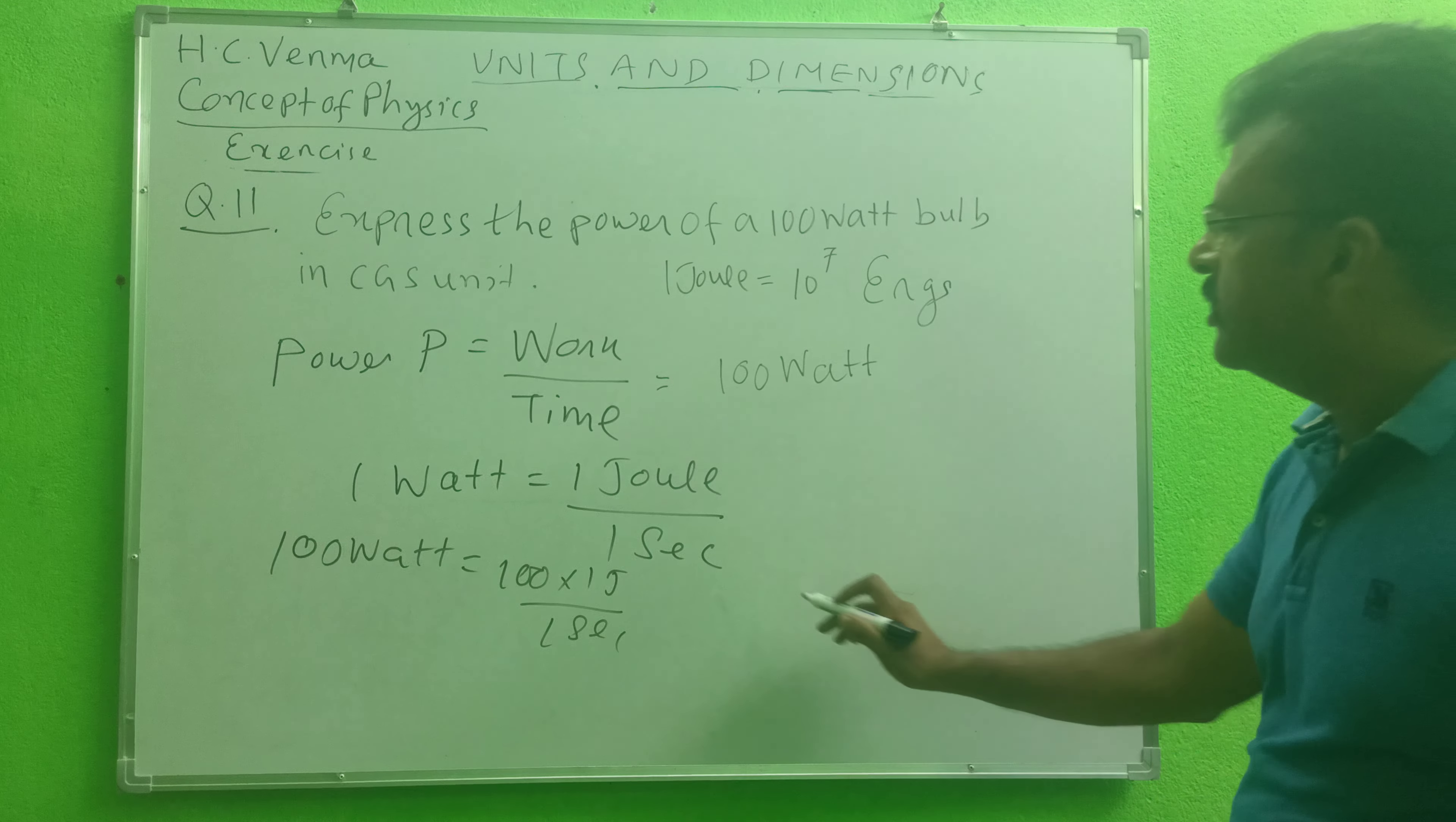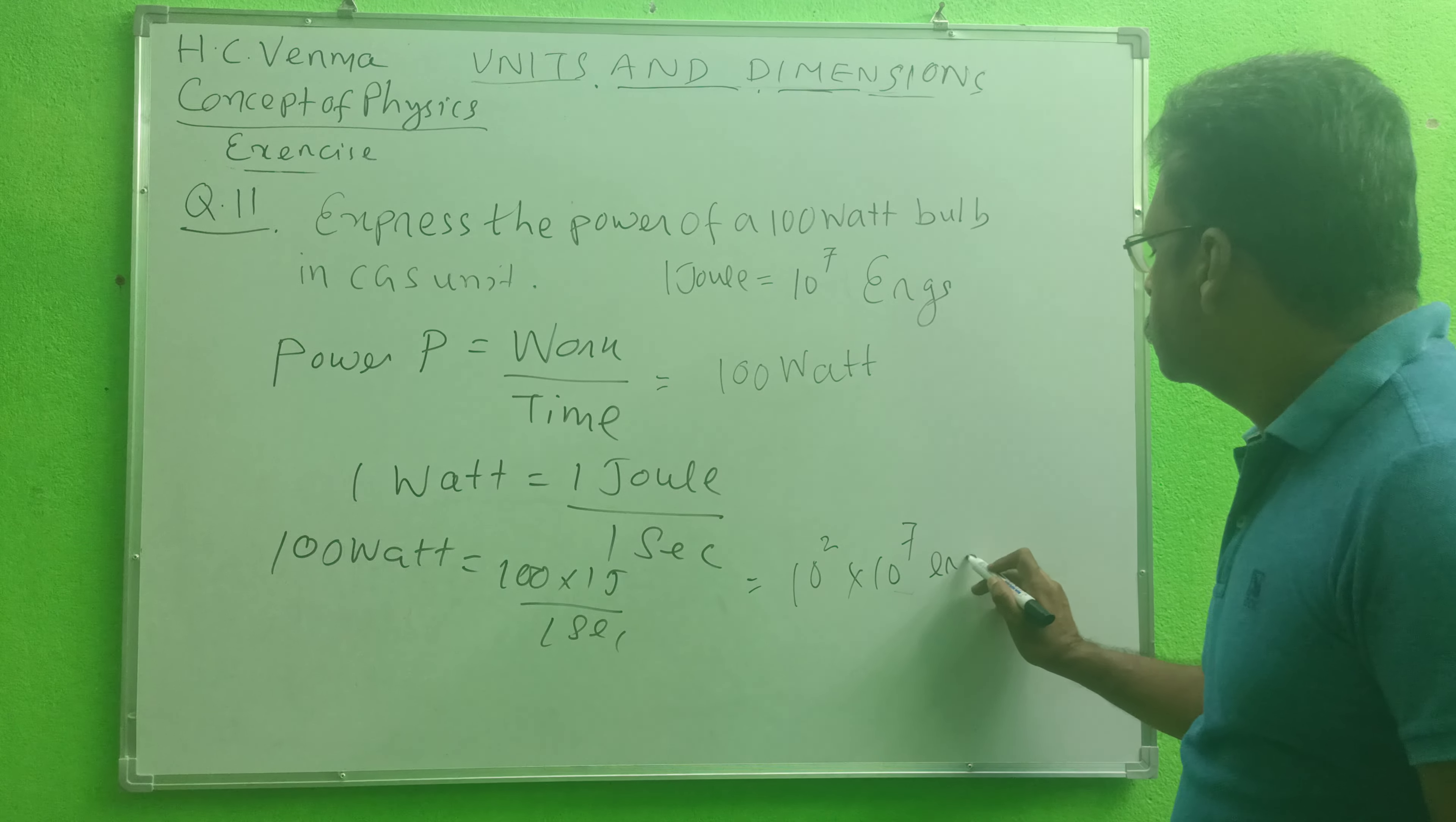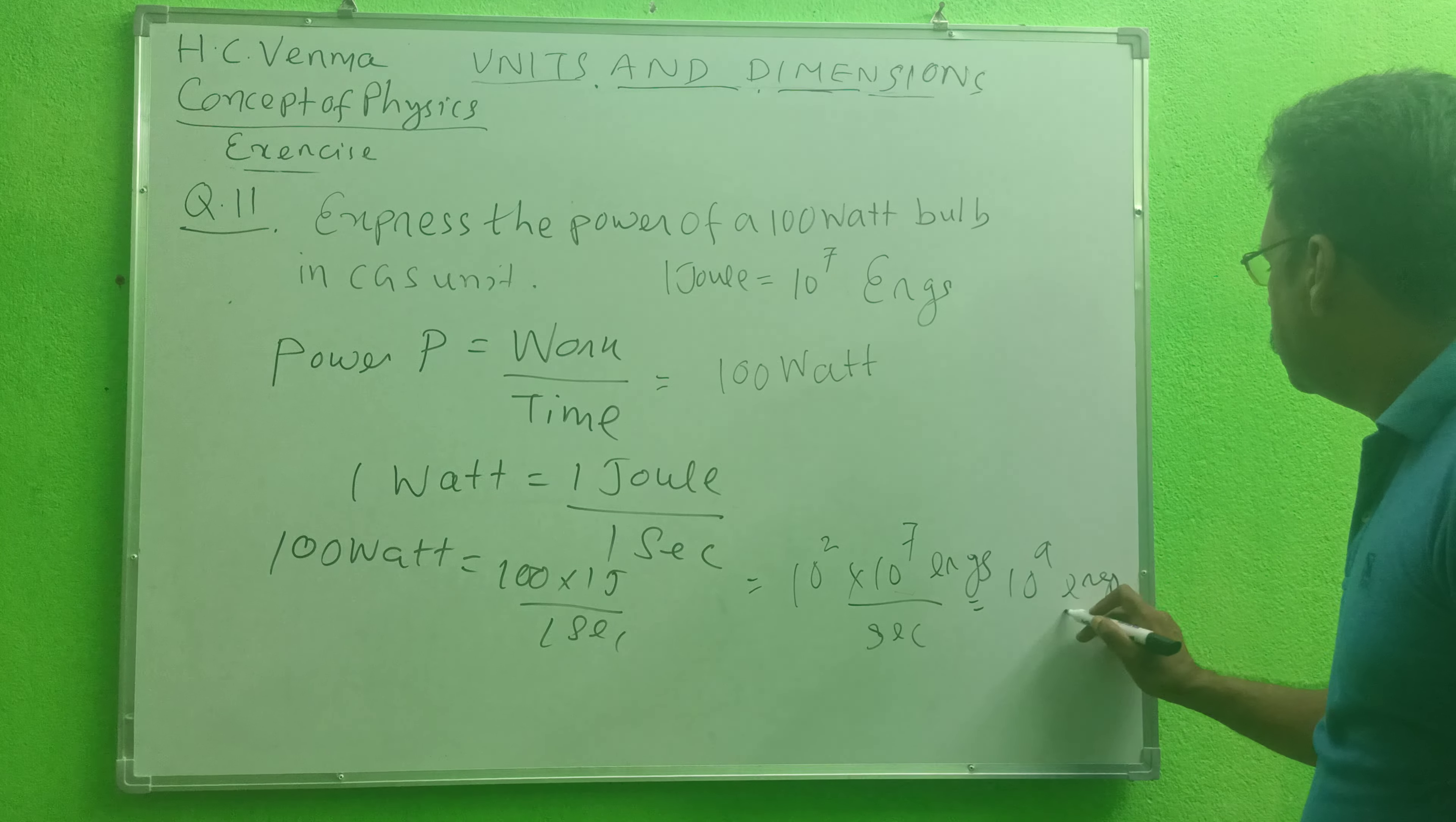Okay, student, then we may write here: 100 means 10 to the power 2 into 10 to the power 7 ergs per second.